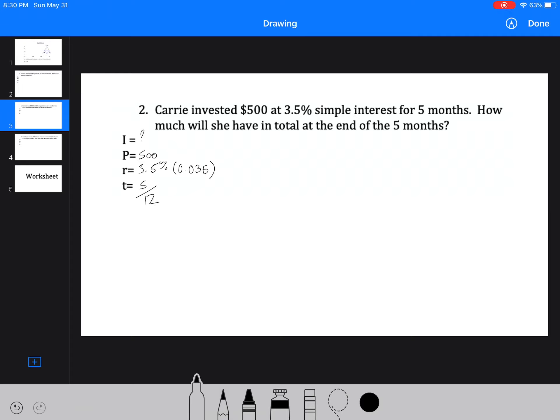So then we have I equals PRT again. We have 500 times 0.035 times 5 over 12. So because this is multiplying, what we can do is we can actually just multiply all the numbers on top and then divide by the 12 at the very end. You could do 5 divided by 12 all at once, but it's not going to make any difference. So you're going to get 7.29. So she made $7.29 in five months, which isn't great, but it's free money.